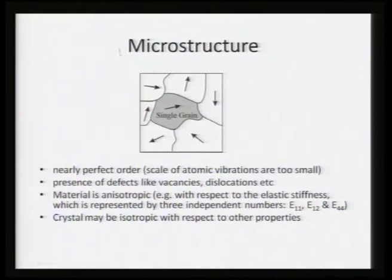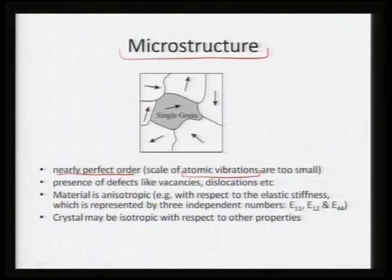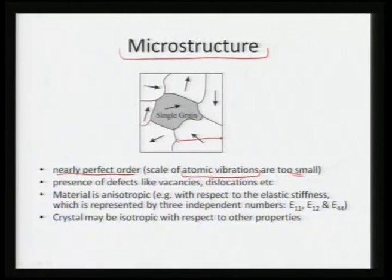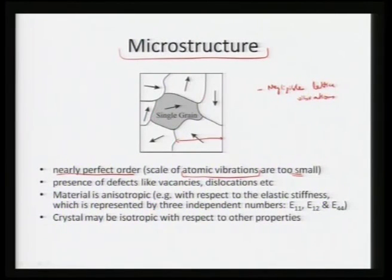At the next scale — the microstructure or nanostructure — we have nearly perfect order, because the scale of atomic vibrations that existed at the atomic level is now very negligible. Atomic vibrations are very small compared to the length scale of one grain. So within one grain, lattice vibrations are negligible, though there can be defects such as vacancies, dislocations, Frenkel defects, or Schottky defects. Within a single grain, the material is anisotropic.